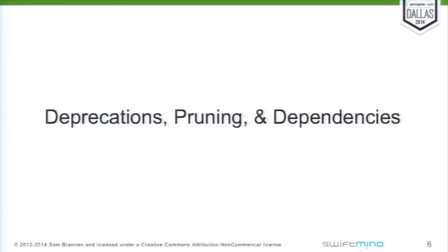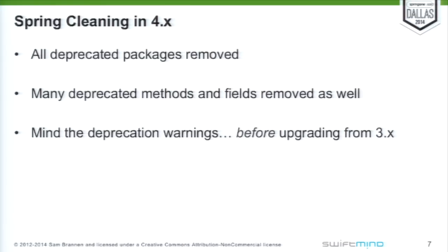First up: deprecations, pruning, and dependencies — what have we gotten rid of? With 4.x, so in 4.0, we took the opportunity to clean up a lot of the stuff we had lying around for many years. First off, we got rid of all deprecated packages, then many deprecated methods and fields. The basic point here is you need to mine the deprecation warnings. If you're on 3.2 and plan to move to 4.0 or 4.1, you might find that some of your code just won't compile. That's not just in the core framework, but also in the testing framework — so be mindful of your deprecation warnings.